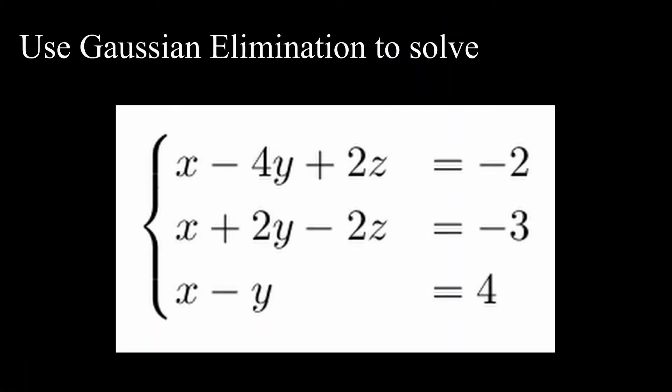For a more involved example, we're going to use Gaussian elimination to solve the system x minus 4y plus 2z equals negative 2, x plus 2y minus 2z equals negative 3, and x minus y equals 4.